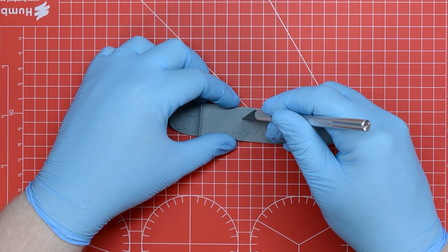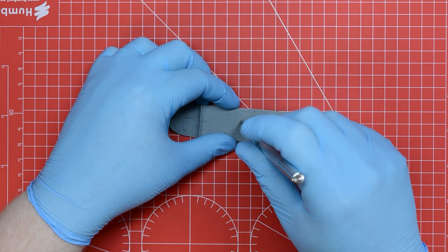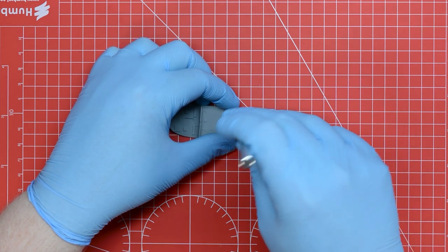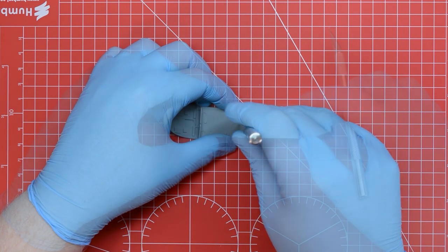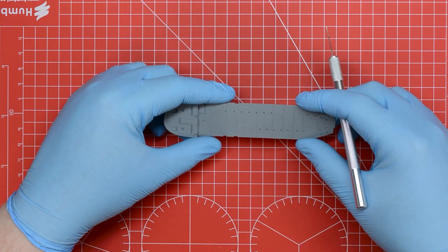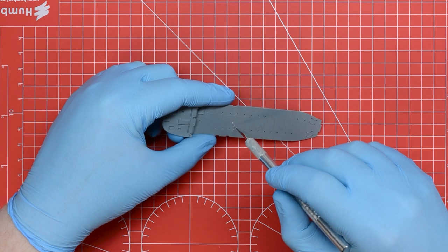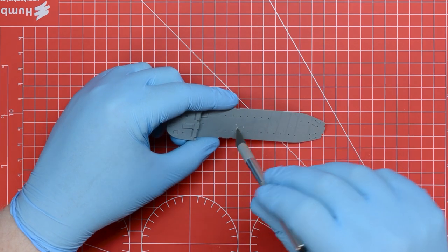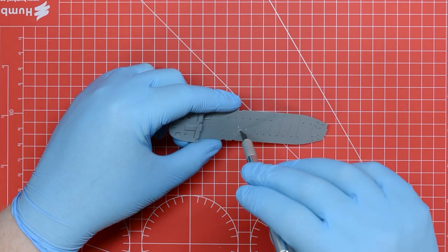Following the instructions there are some locating holes which need to be opened up using a modelling drill but obviously we don't have one in our basic toolkit so we're just going to twist the modelling knife in the recessed locating point provided just until it goes through the part and then we'll clean this up gently with the knife leaving us with a nice neat hole.